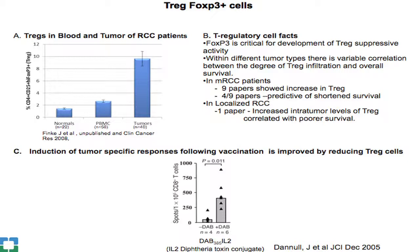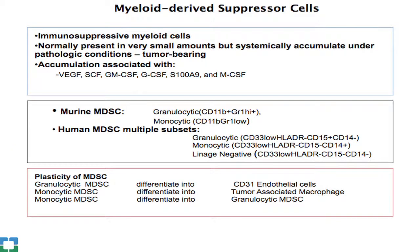Looking at the literature, nine papers showed an increase in Tregs in kidney cancer patients, but only four of those related to poor clinical outcome, so more work is needed to clarify the relationship to outcome. It has also been shown that depleting Tregs using an IL-2–diphtheria toxin conjugate can improve the T cell response to a vaccine.